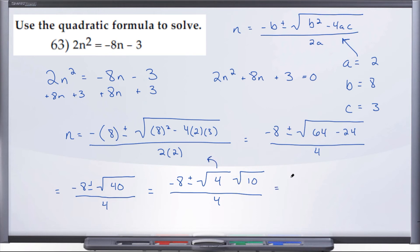And so we'll have -8 ± ... What does √4 come out as? A 2. Rewrite your bad stuff, all over 4.